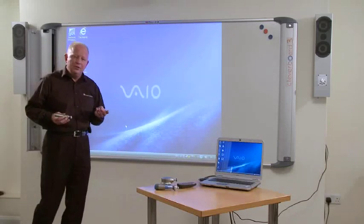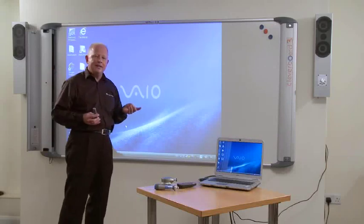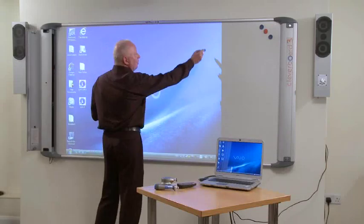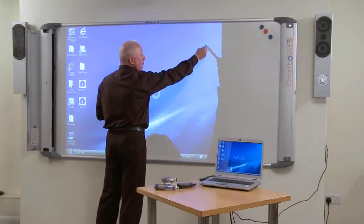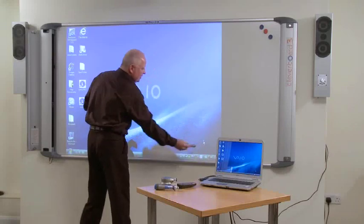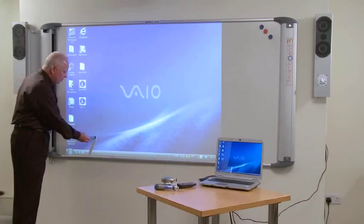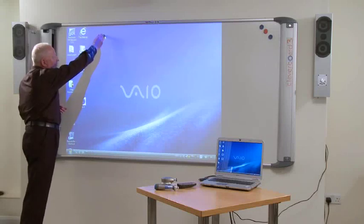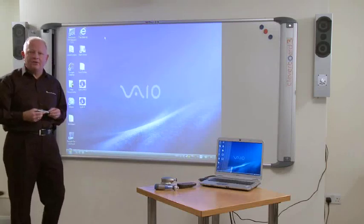We next need to do a quick check to make sure that the board is calibrated accurately. I normally bring the pen up to the four corners, and you're looking for the cursor to drop completely under the nib of the pen. I'm now accurately calibrated.